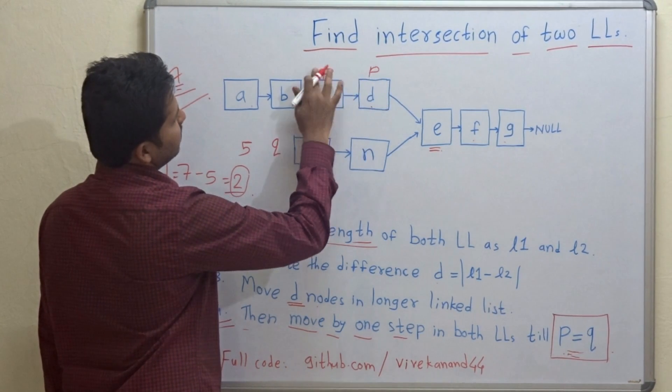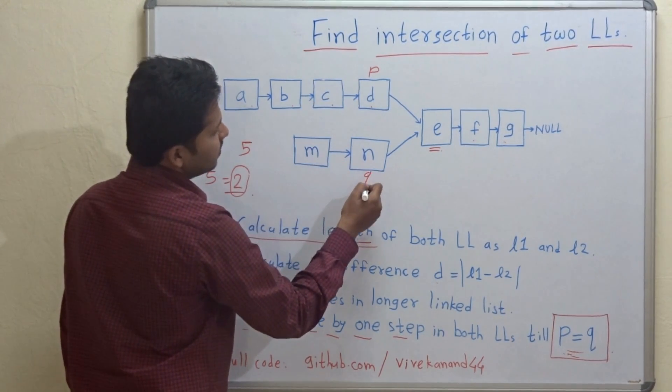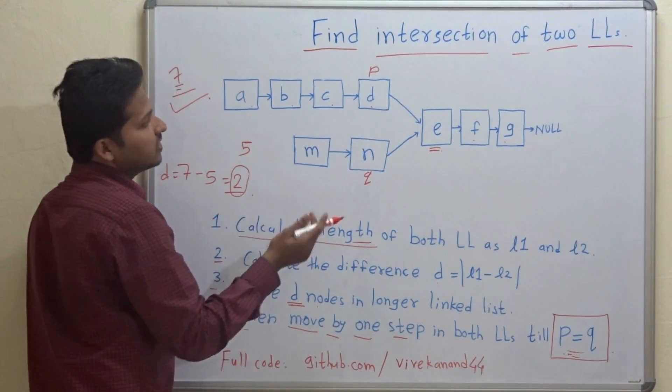P will move by one step and Q will move by one step. So whether P is equal to Q? No. So let's go to the next iteration.